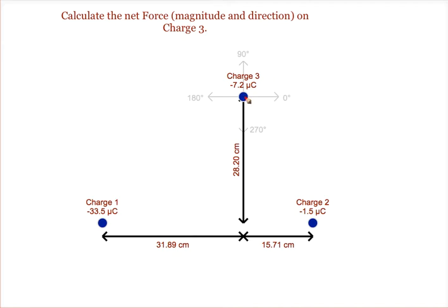Since they are both negative charges, they will repel each other. So charge 3 will be pushed to the right, and it will be pushed up.